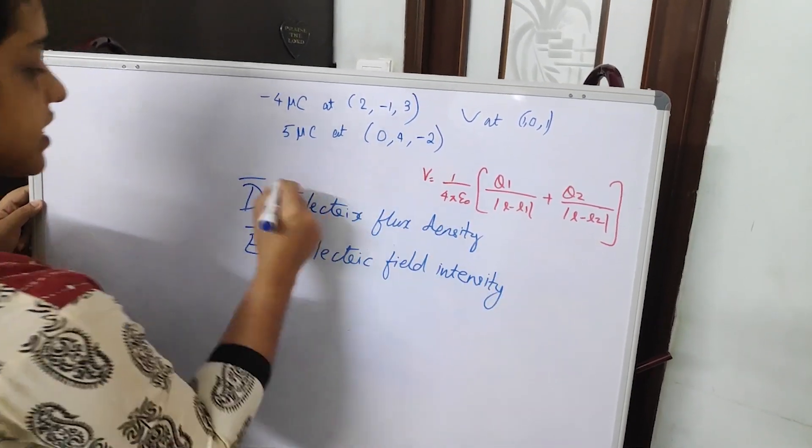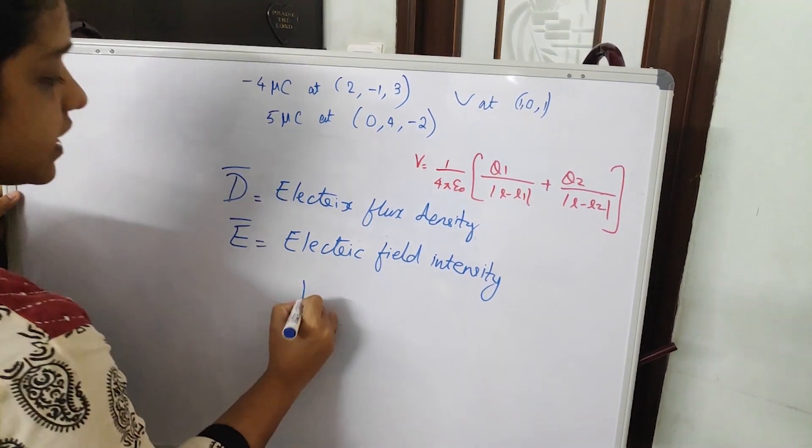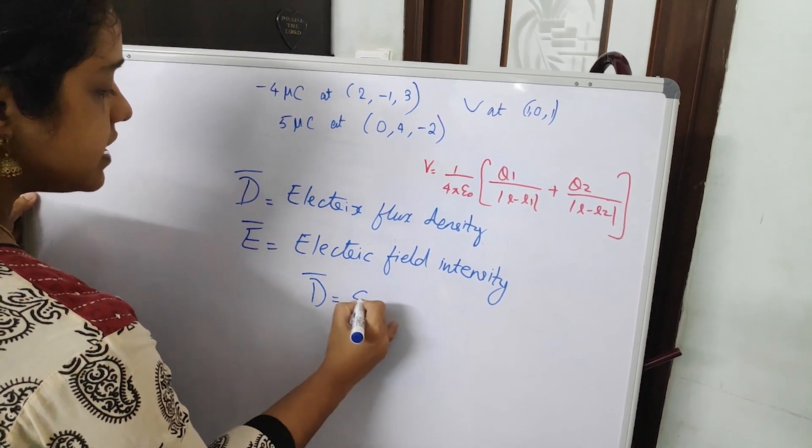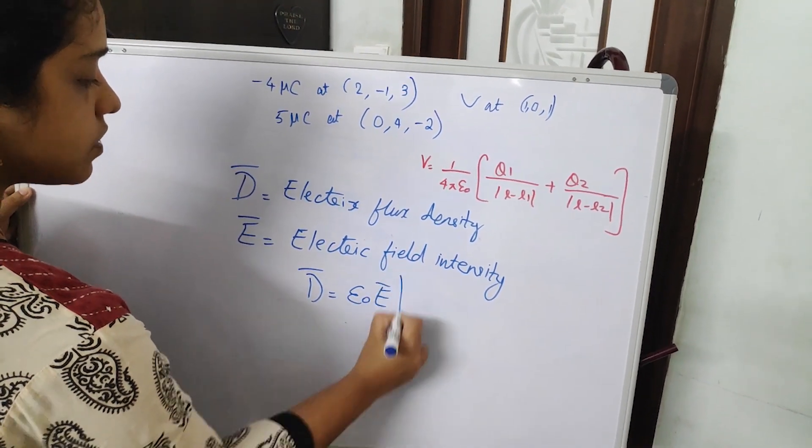Both these are vector quantities and they are related with the equation vector D is equal to epsilon 0 E.